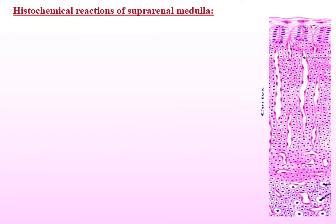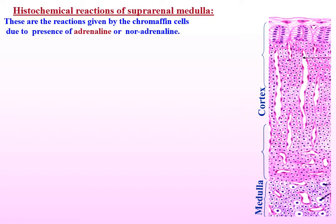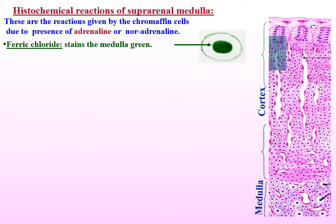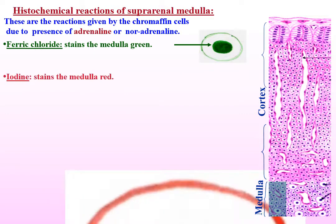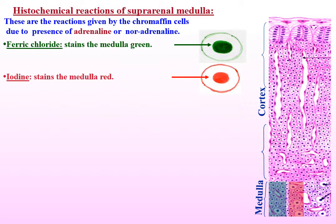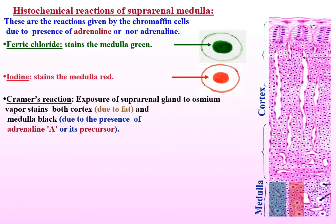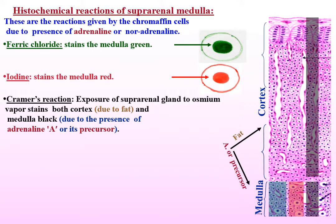Histochemical reactions of suprarenal medulla: these are the reactions given by chromaffin cells due to the presence of adrenaline or noradrenaline. Ferric chloride stains the medulla green. Iodine stains the medulla red. Cramer's reaction: exposure of the suprarenal gland to osmium vapor stains both cortex — due to the presence of fat — and medulla — due to the presence of adrenaline or its precursor — black in color.